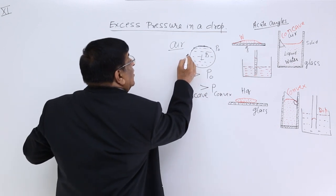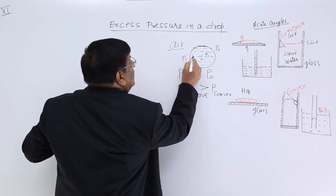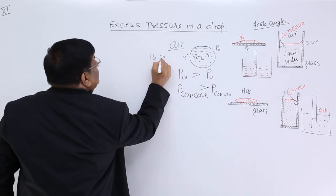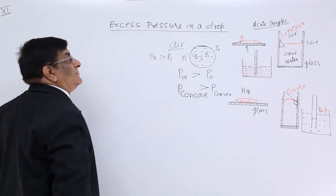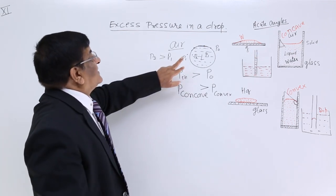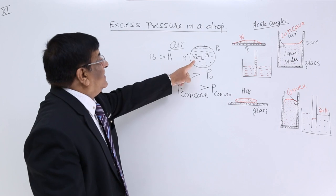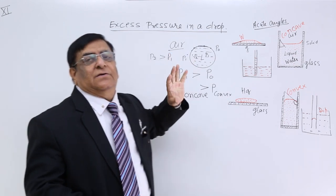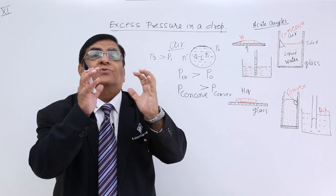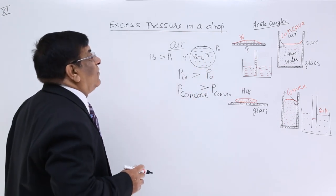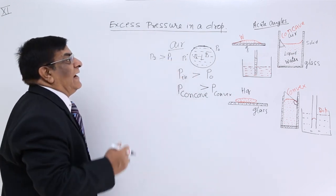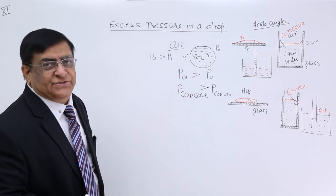If we take two points, P1 and P2, then P2 is larger than P1. There is always a pressure difference inside and outside the drop because the surface is always trying to contract. Now we want to calculate how much is the pressure difference and how it is related to surface tension.